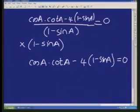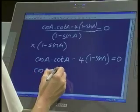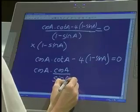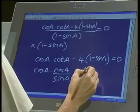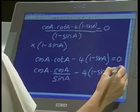Now I've got this cot a and cos and sine, and what we do next is try to write everything in terms of a common ratio, either cos or sine. I know that cot can be written as cos a over sine a, so that's minus 4 into 1 minus sine a equals 0.